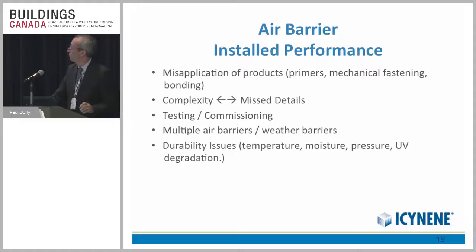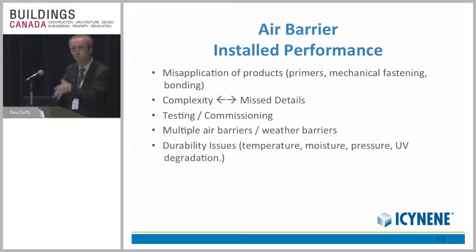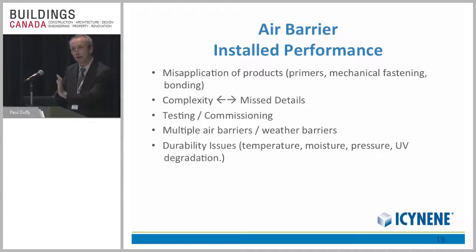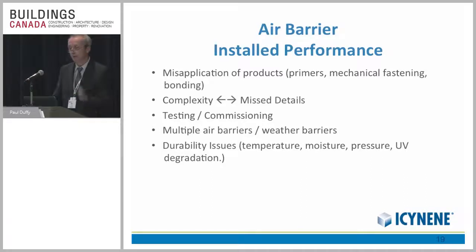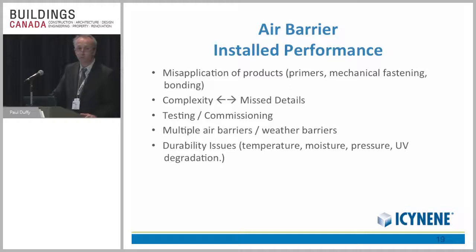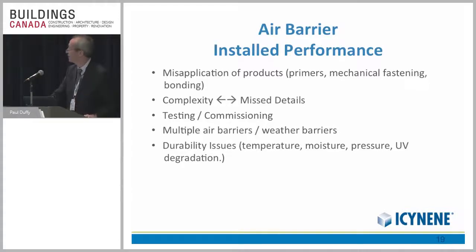Typically, looking at problems in the field, the biggest single problem I see on a regular basis is misapplication of products — using products that have very low vapor permeability as water-resistant barriers on the outside, but they also correspond to vapor barriers and may in fact trap moisture within the wall assembly. You've got to be aware of keeping thermal performance outboard of some of these membranes and materials. And particularly when dealing with existing buildings, complexity becomes a huge issue — going back and fixing existing buildings to sort out these issues can be a real problem.